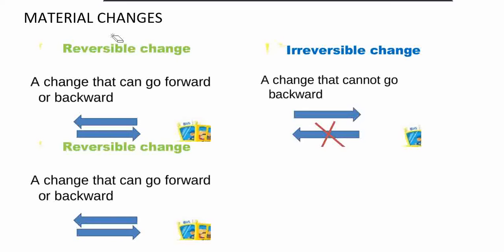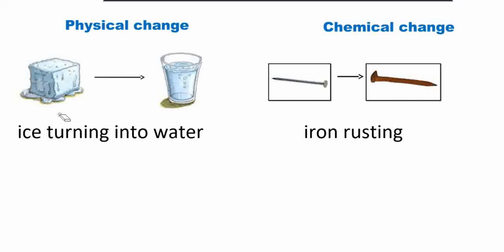Now let's move to our next topic: material changes. There are two types of changes — reversible change and irreversible change. A reversible change is a change that can go forward and backward. An irreversible change is a change that cannot go backward — it can only go one direction. Physical change means ice turning into water, which can be reversed back. Chemical change, which is irreversible, cannot be turned back — for example, an iron nail undergoing rusting changes color and cannot be reversed. Chemical change is irreversible; physical change is reversible.